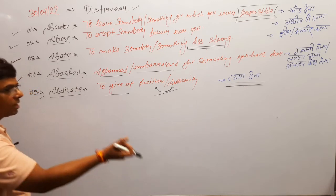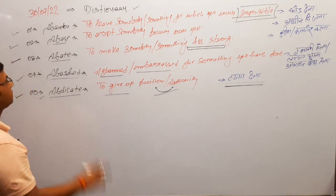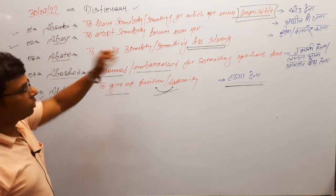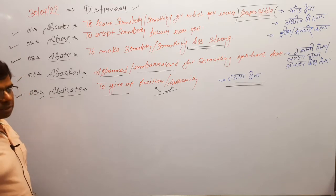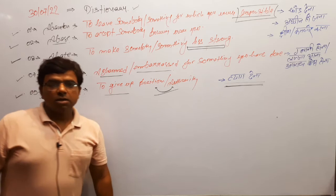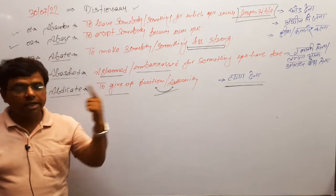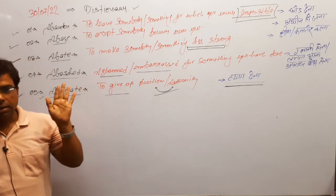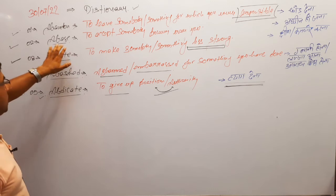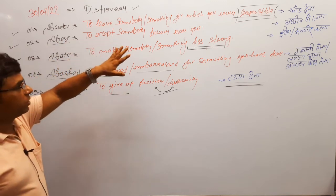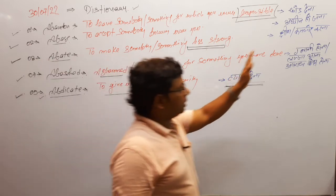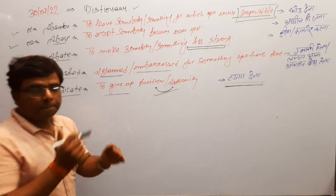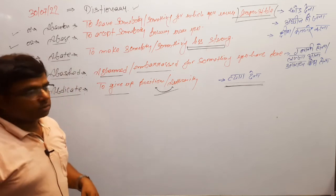The second word is 'abase': to accept somebody's power over you. When you accept that the person in front of you is more powerful — physically or mentally — and you submit to them, that situation uses the word 'abase': to accept somebody's power over you. In Hindi: adheen ho jana, par-tantra ho jana. Before independence, we were par-tantra — under the control of the British.